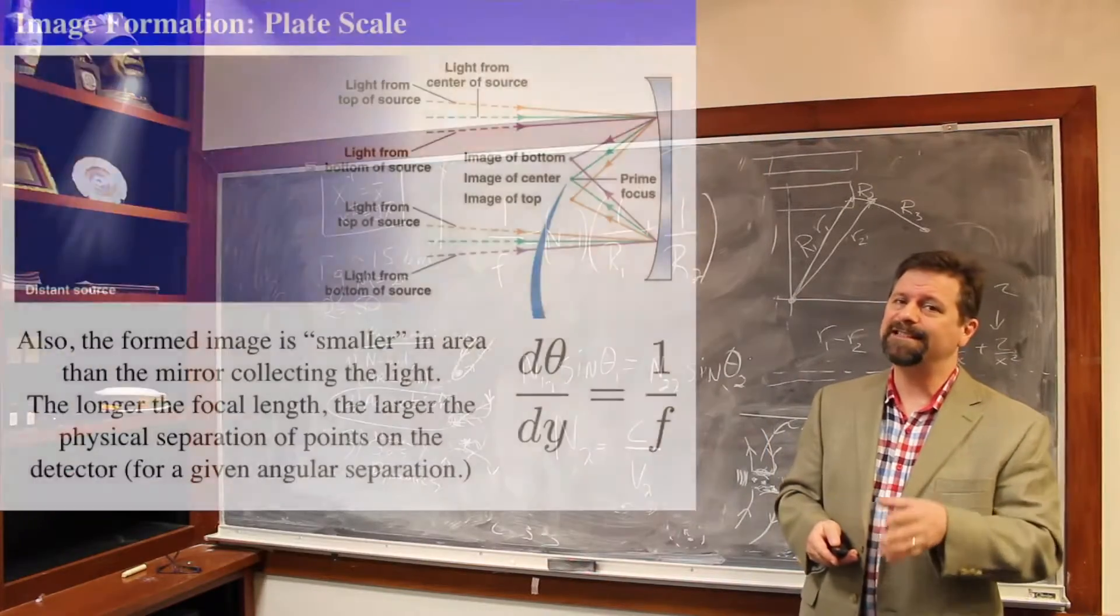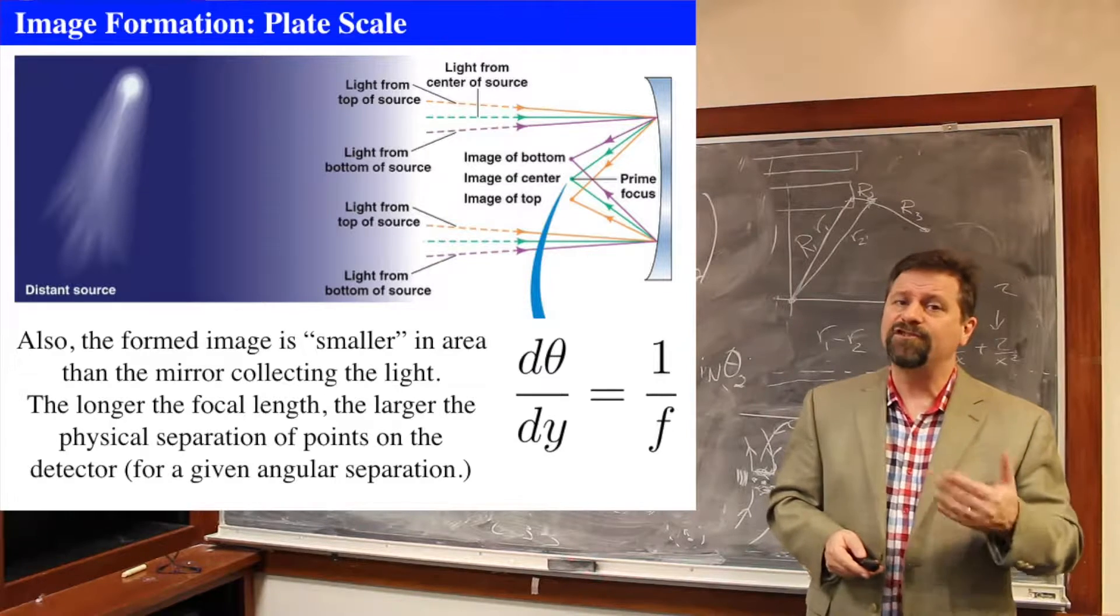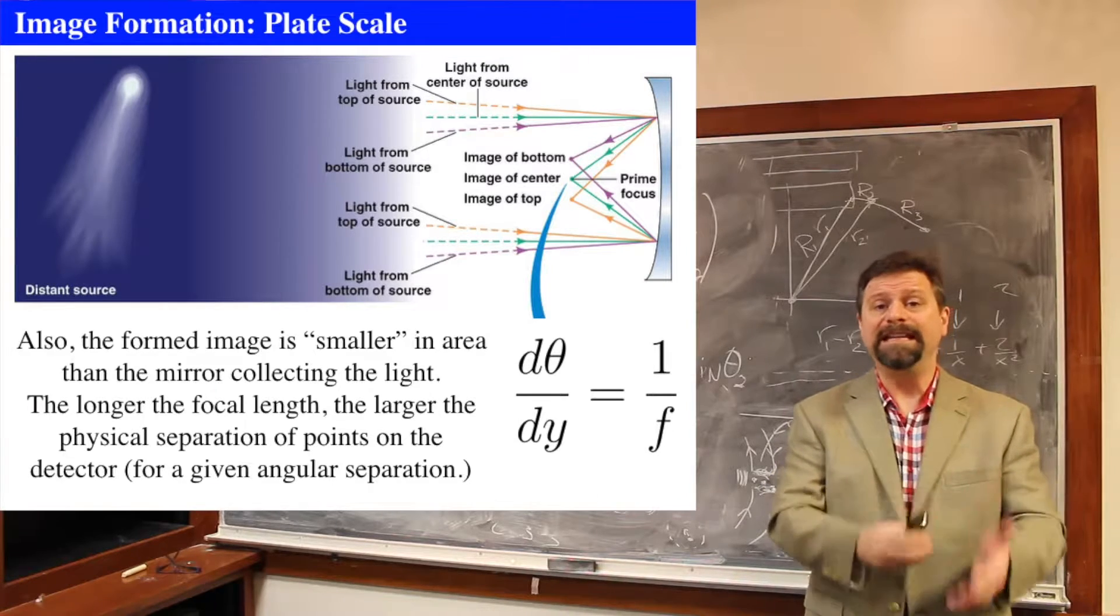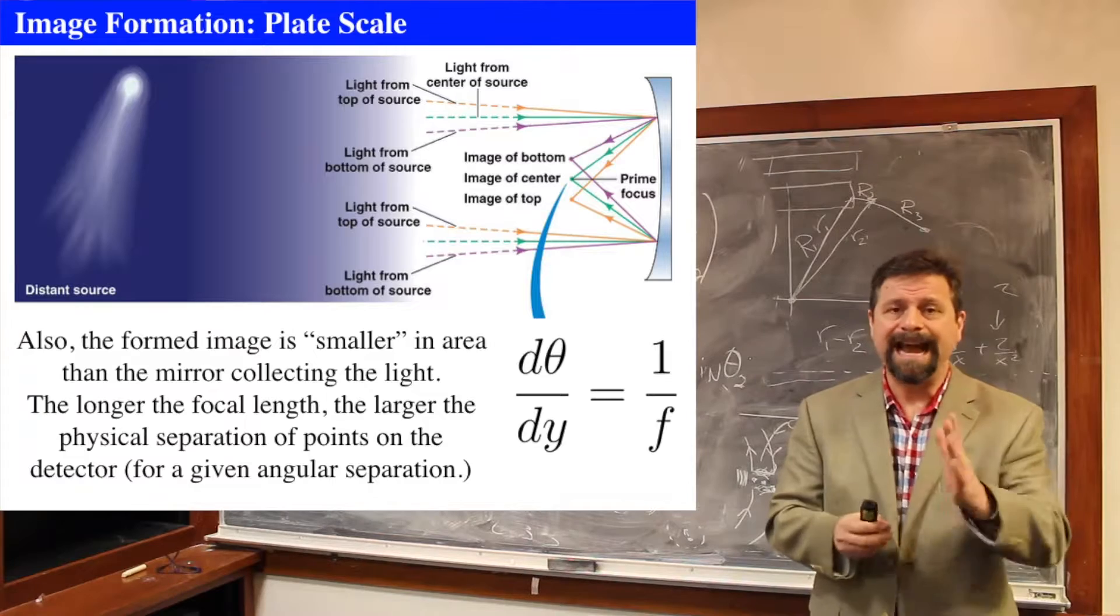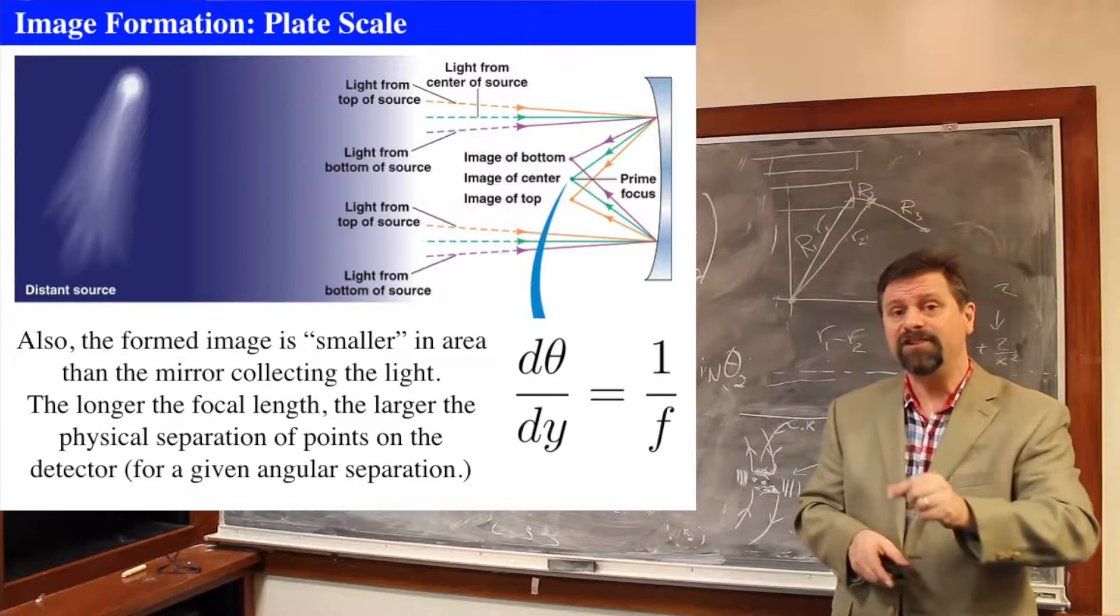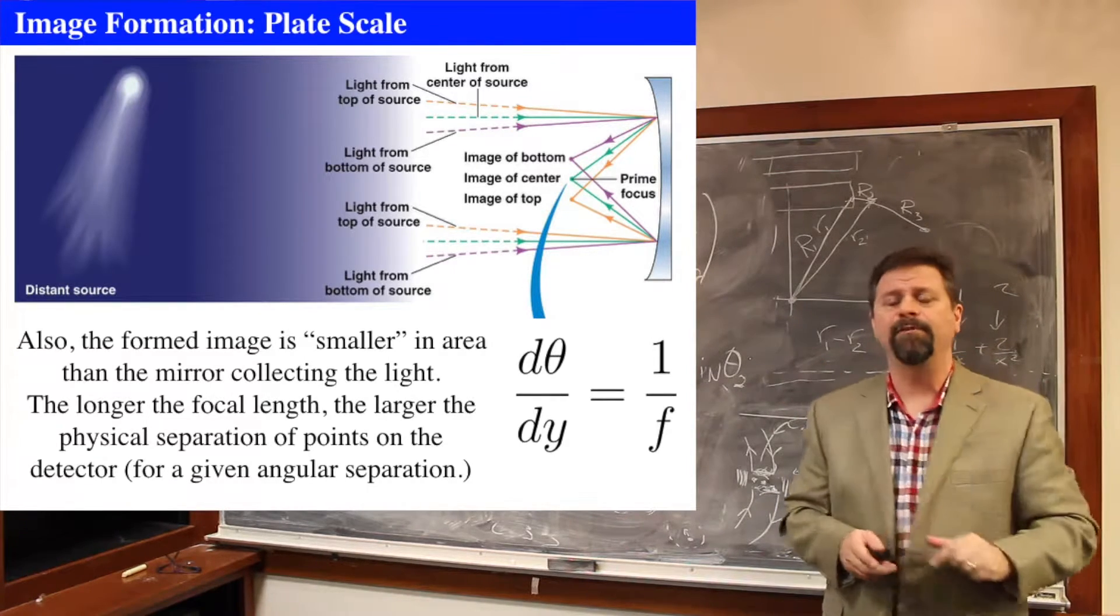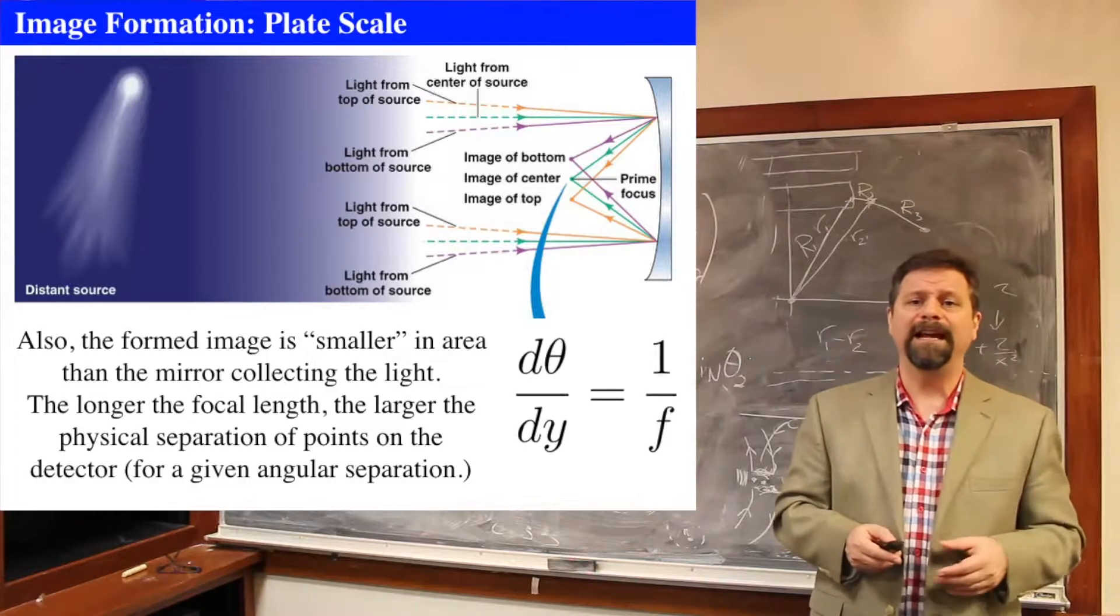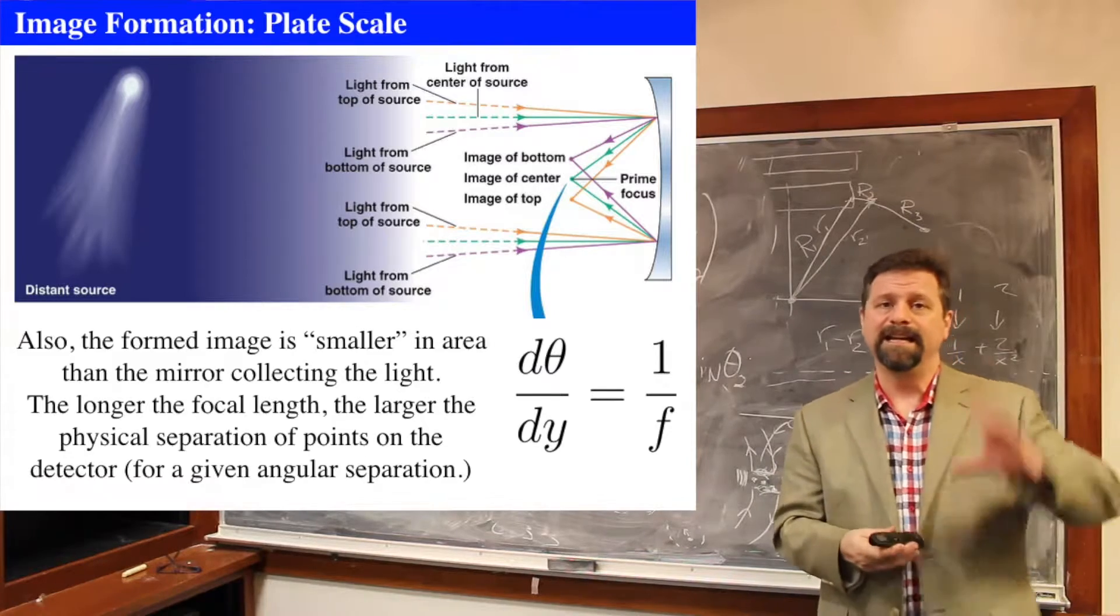And that's what we call the plate scale. The focal length of an object determines its plate scale. The plate scale says, how big is your image at the prime focus? When you focus all your light at that place, so the light goes through the lens, it gets focused down to a point, how big is the image at that place? It started this big, how big is it now at that point?